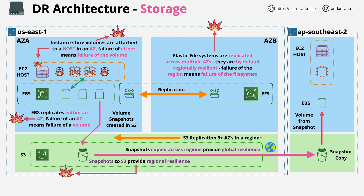For instance store volumes, almost anything can cause data loss — it has no form of resilience. For EBS, it could be impacted by the failure of an availability zone. For S3, generally the entire region would need to fail in order to impact data, and the same is true for the Elastic File System. You can improve this further by using S3 snapshot copy to copy data to a new AWS region, and you also have features like cross-region replication which can copy normal S3 objects between AWS regions.